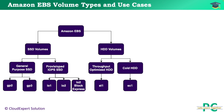Let's review different EBS volume types and use cases. There are two different types of EBS volumes: SSD volumes and HDD volumes. For SSD, there are two categories: general purpose SSD and provisioned IOPS SSD, also called PIOPS. General purpose SSD is further divided into GP2 and GP3, whereas provisioned IOPS has IO1, IO2, and IO2 Block Express. IO2 Block Express is the latest EBS volume type that AWS introduced very recently.